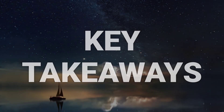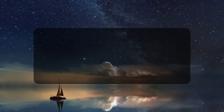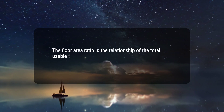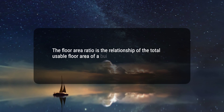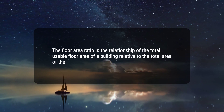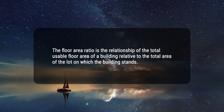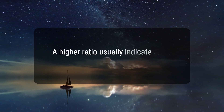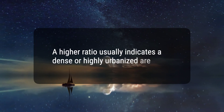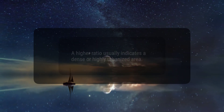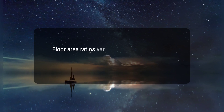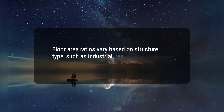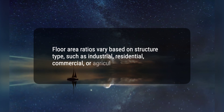Here are three key takeaways. 1. The floor area ratio is the relationship of the total usable floor area of a building relative to the total area of the lot on which the building stands. 2. A higher ratio usually indicates a dense or highly urbanized area. 3. Floor area ratios vary based on structure type, such as industrial, residential, commercial, or agricultural.